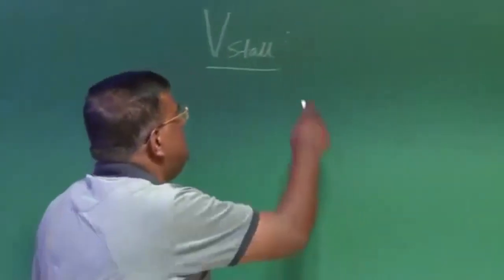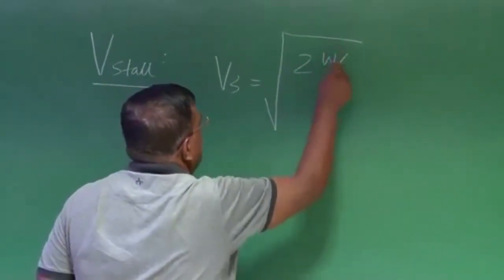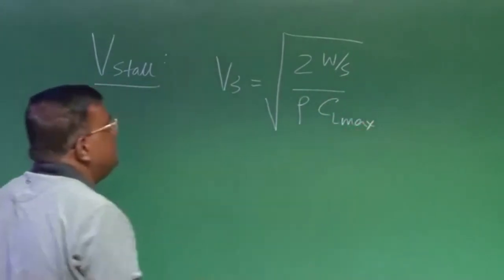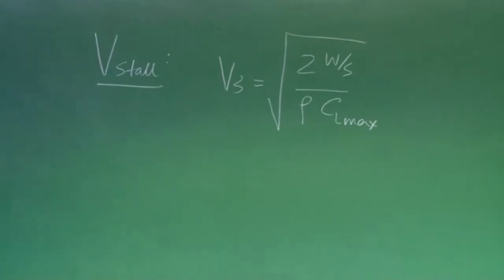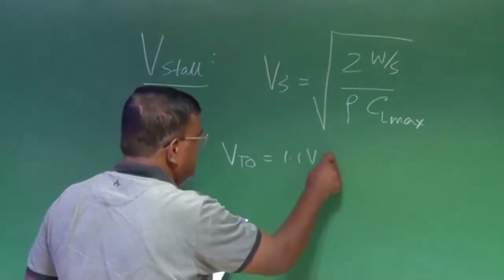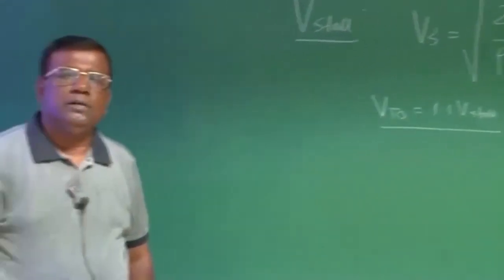If you see V-stall, it is given by square root of 2 W by S divided by rho CL max. As per the regulations, V takeoff should be around 1.1 V-stall. Please understand, these specifications may be slightly different for military aircraft or civil aircraft. When you are designing an aircraft, you have to follow some regulations and specifications.